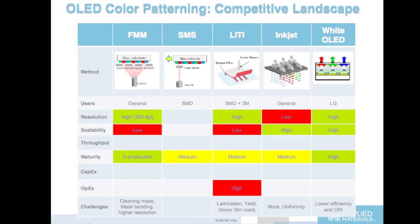One approach is a fine metal mask — that's exactly how Samsung makes their Galaxy S phones now, and they can get to 300 dpi resolution in production. But it's really, really hard to scale this mask up to very large OLED TV sizes. Samsung Display also uses a different kind of mask — a small mask — and again you're evaporating the material, but both approaches use masks.